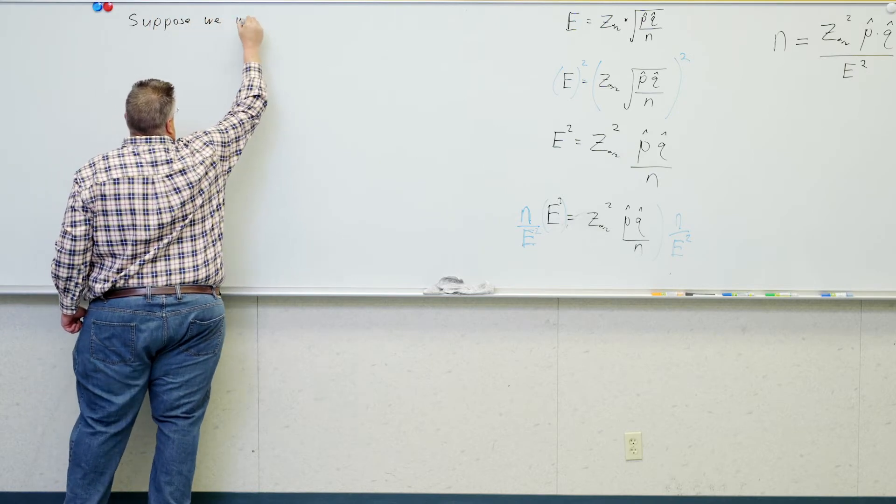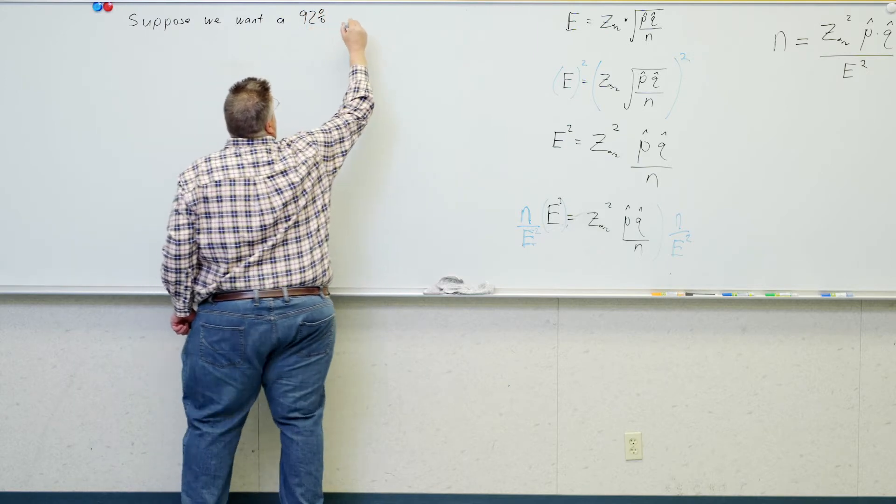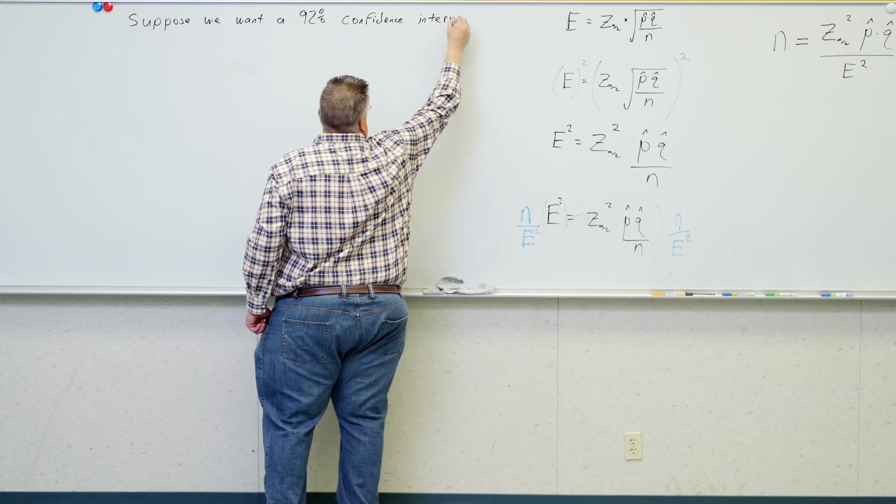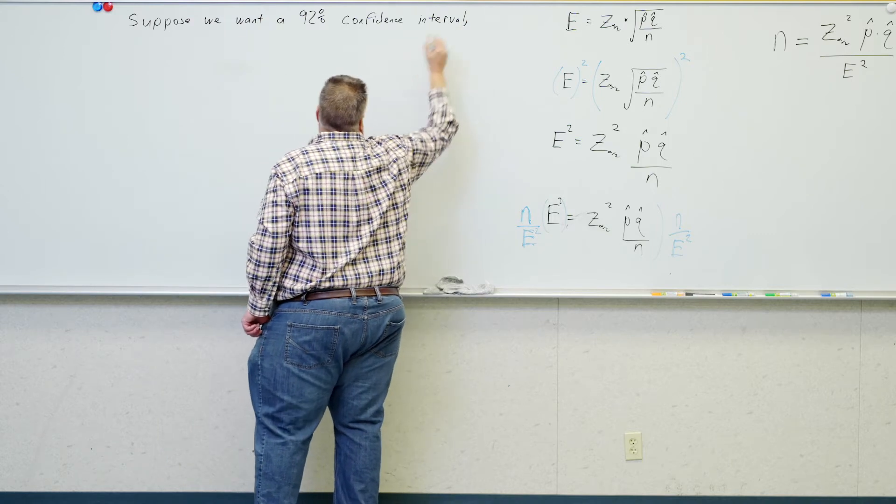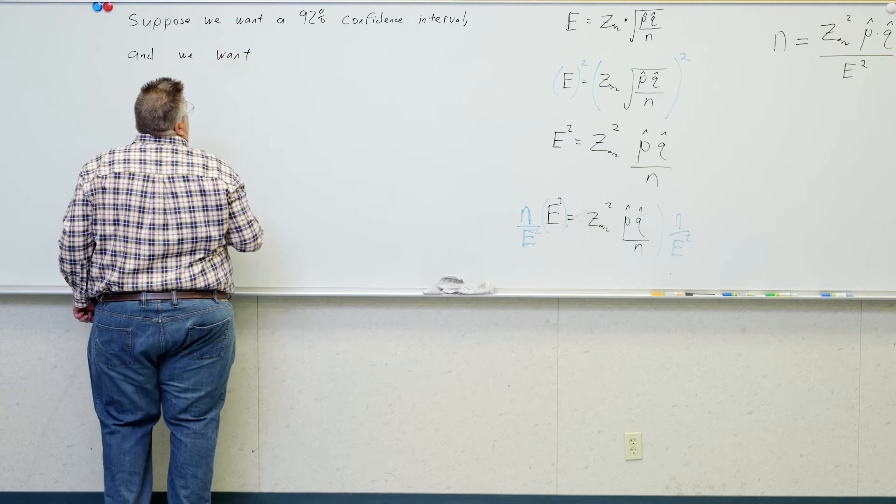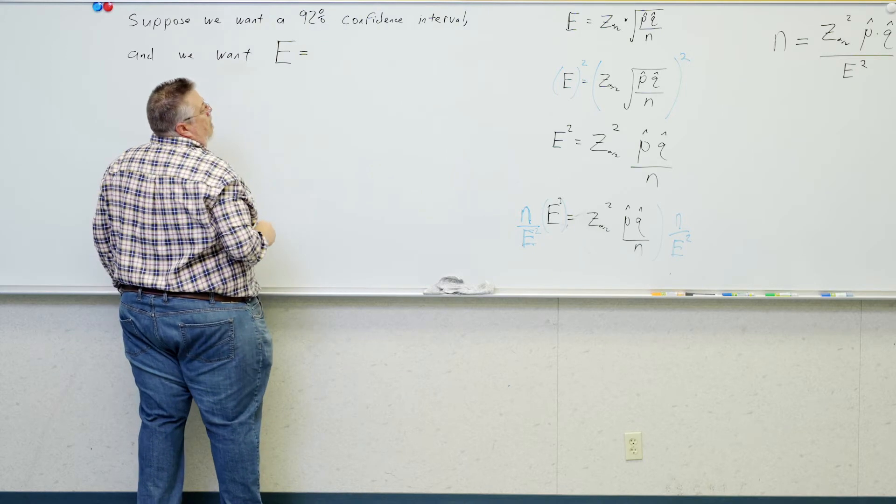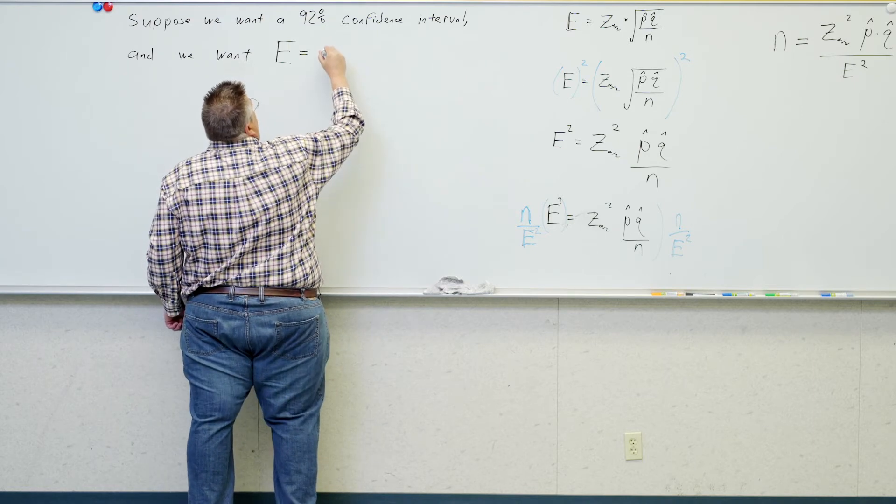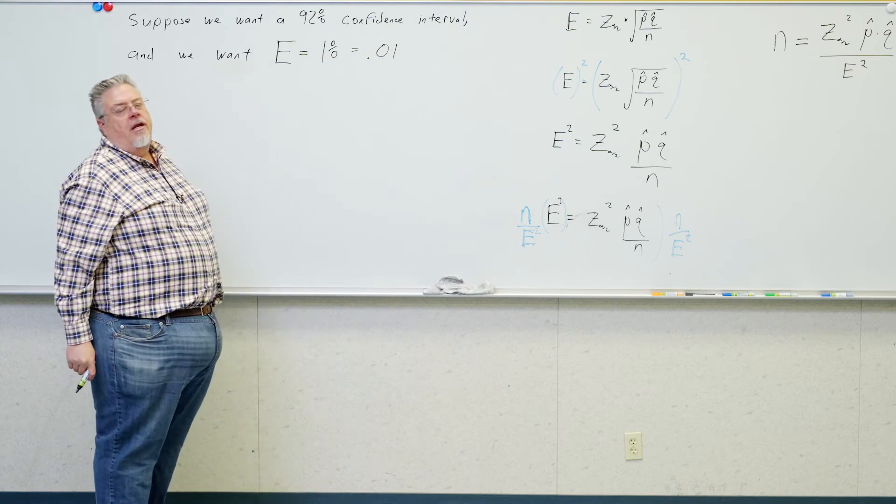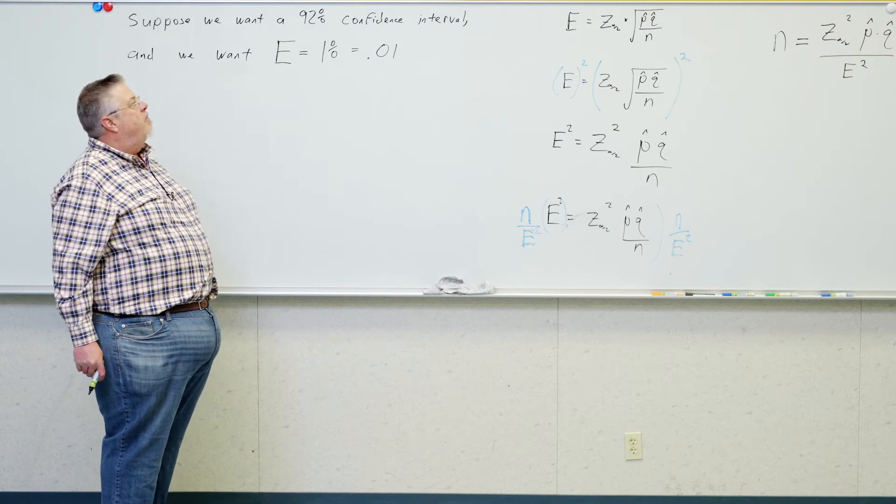So, suppose we want a 92% confidence interval. And we want e, our margin of error to be 1%, which is .01 when I write it as a decimal. And one mistake people make is putting in e as a percentage in that formula instead of a decimal. E's got to be written as a decimal.